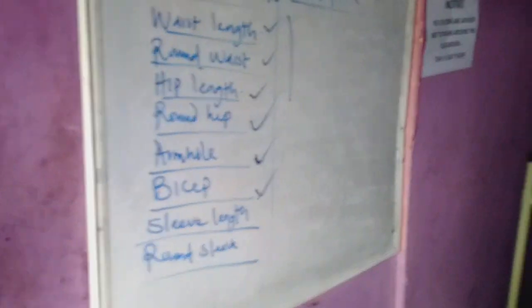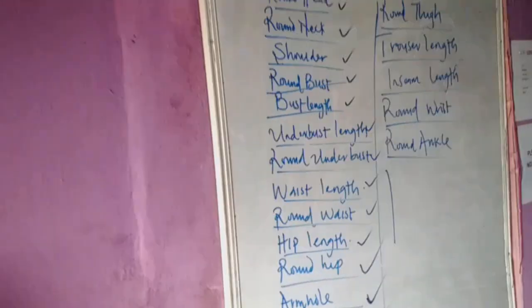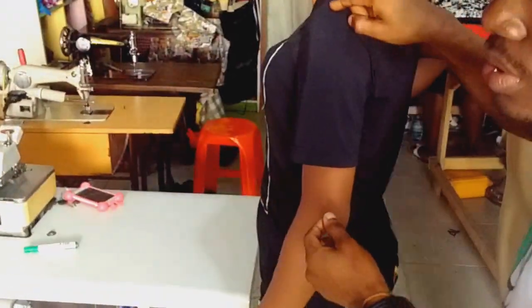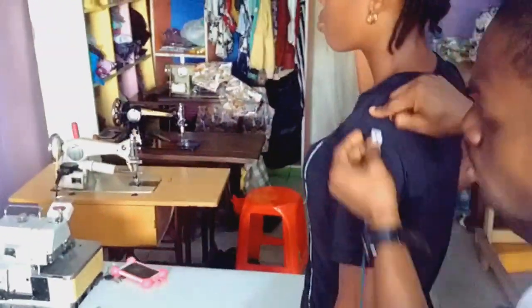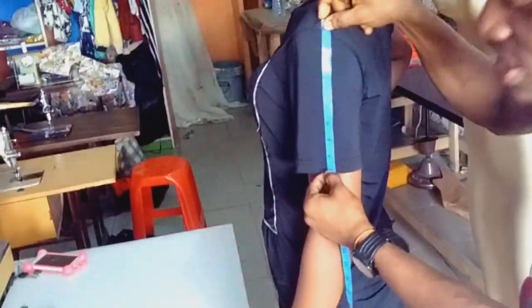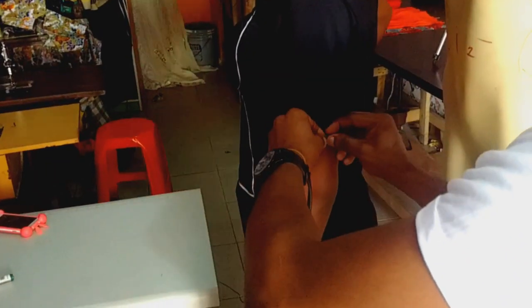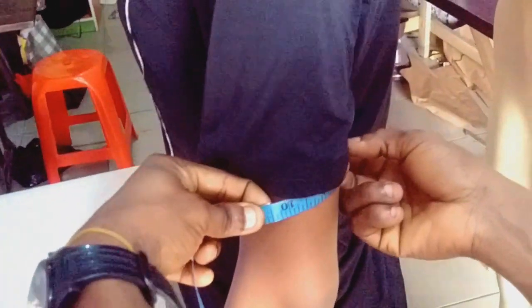We are done with the bicep. Now let's go to sleeve length. To measure sleeve length, start from that same collar bone — remember when we measured the shoulder from collar bone to collar bone — then from that collar bone down to wherever you want the sleeve to stop. If we want it to stop at 9 inches, the sleeve length is 9 inches. At that 9-inch point, you then measure the round sleeve, which is 10 and a half inches.